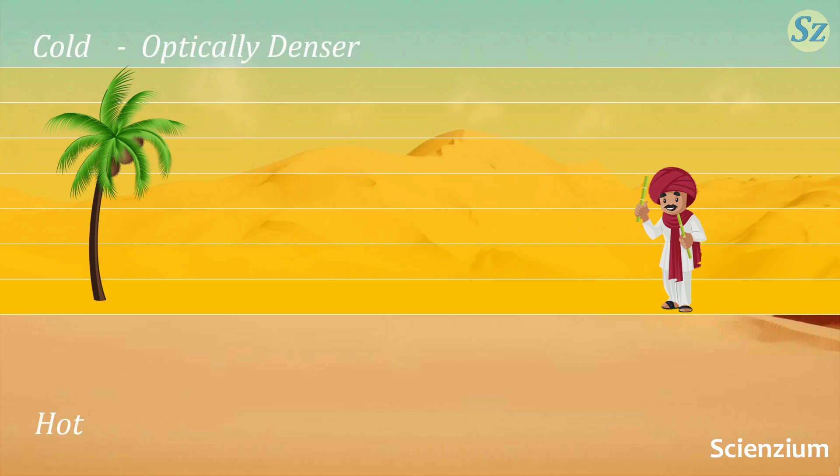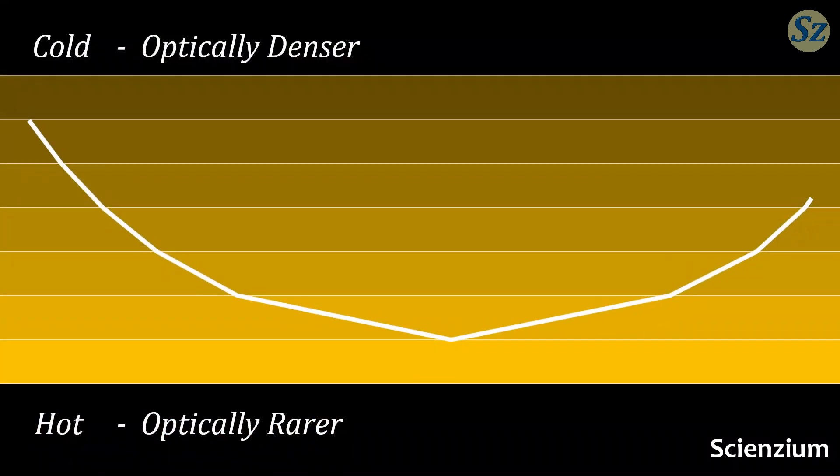Cooler air is optically denser, while hotter air is optically rarer. However, this causes light to refract. When light from an object reaches our eyes, it bends because of this temperature difference between the layers. Let's take a closer look at this.